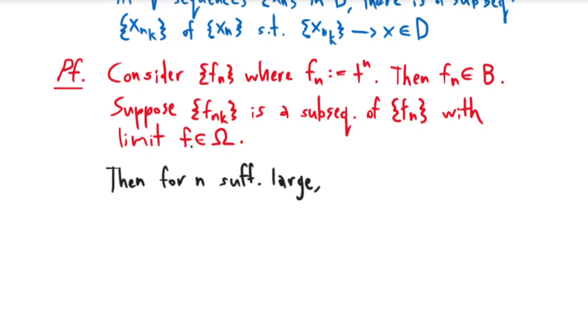This would mean that the supremum over t in [0,1] of |f_{n_k}(t) - f(t)| can be made less than ε, and this is for any ε > 0.